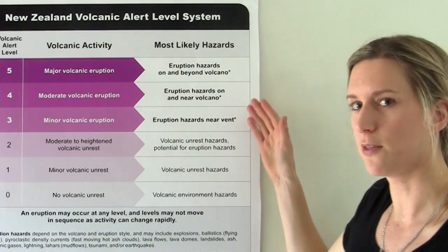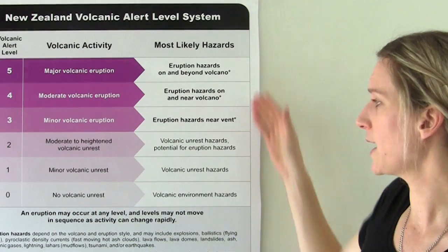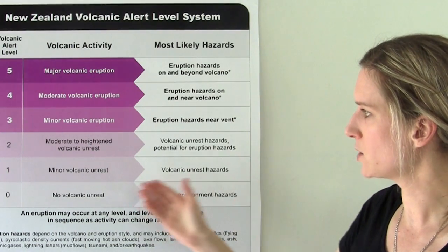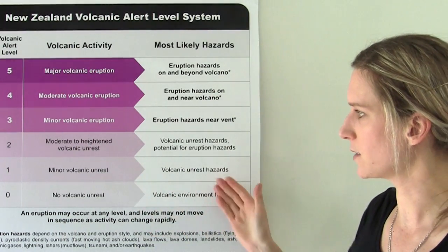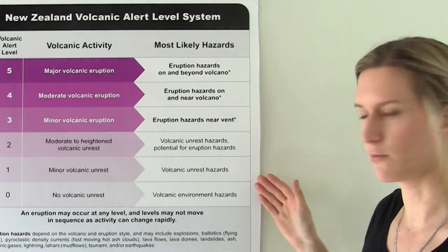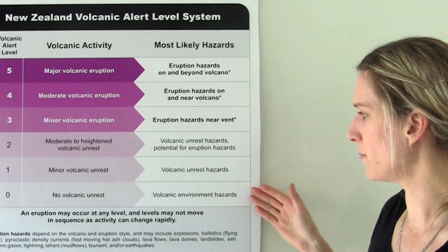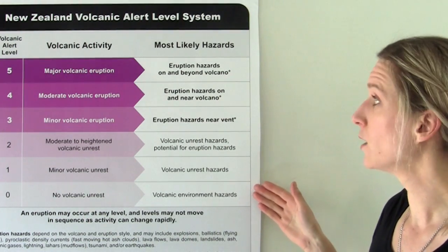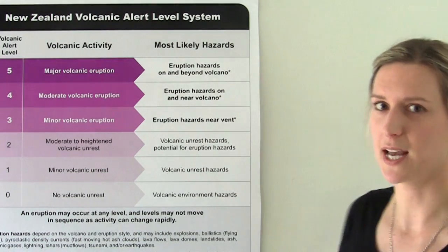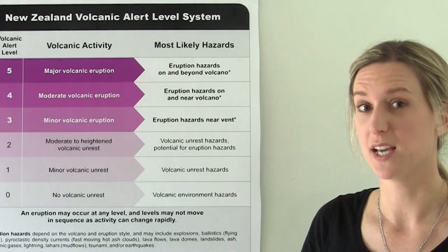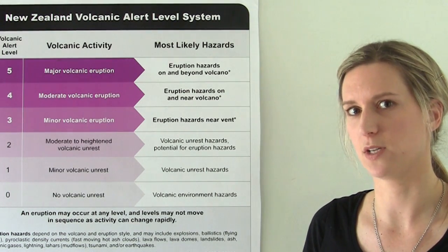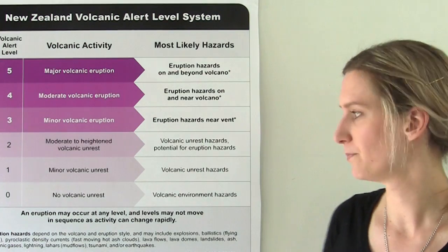On this side we've got the most likely hazards that are associated with each of the volcanic activity levels. These range from volcanic environment hazards right through to eruption hazards that might impact the area on the volcano as well as beyond the volcano.